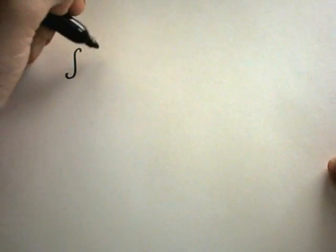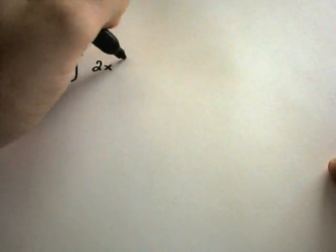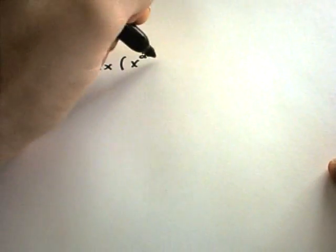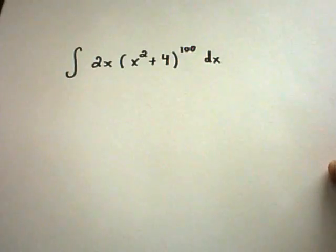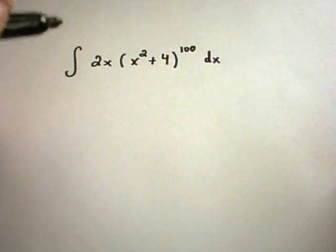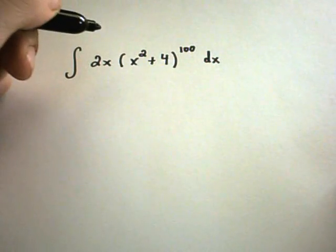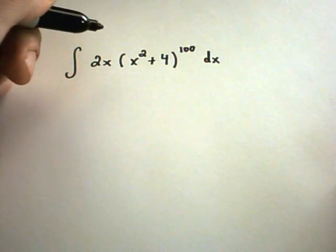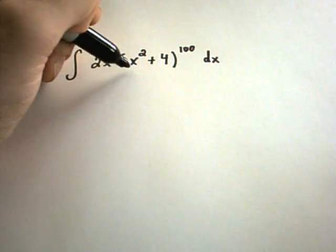So suppose we have the following problem. Suppose we have 2x and then we have x squared plus 4, and let's make it raised to the 100 power. Now if you didn't know anything about u-substitution and you've seen a little bit of integration, you could simply multiply this thing out. You'd have a whole bunch of terms and then you could integrate those piece by piece. But probably you wouldn't want to do that. At least I wouldn't want to.